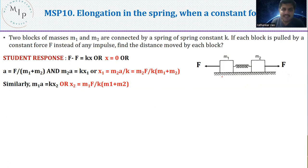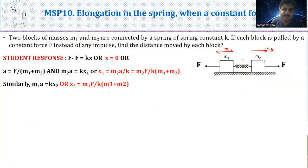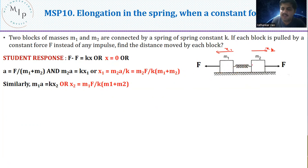So, m₂ might move by a distance x₂ and m₁ might move by a distance x₁, and x₁ will not equal x₂ unless m₁ and m₂ are equal. We need to find these distances in terms of m₁, m₂, and f. The first incorrect response from students was that since there is a force f on one side and a force on the other, the net force is f minus f, so the extension x should be zero — meaning there should be no extension at all.